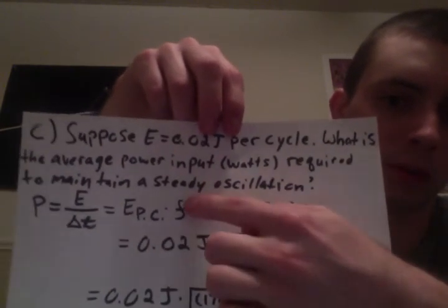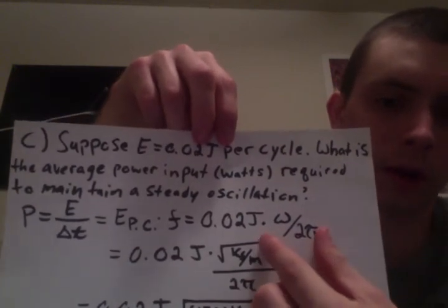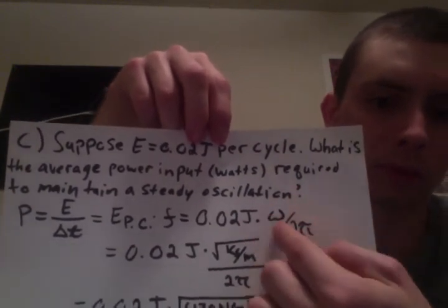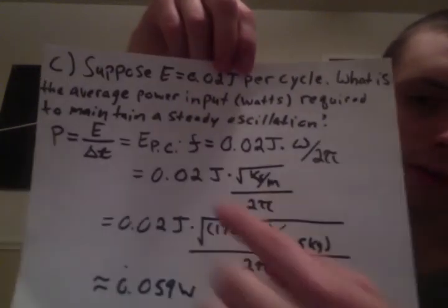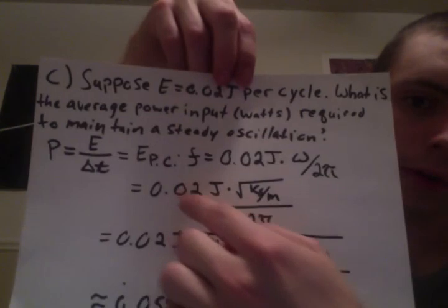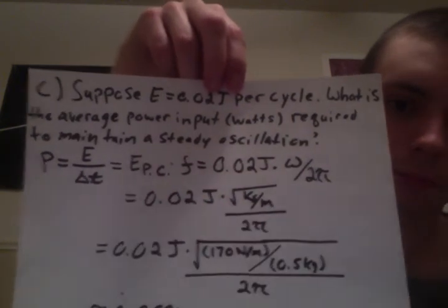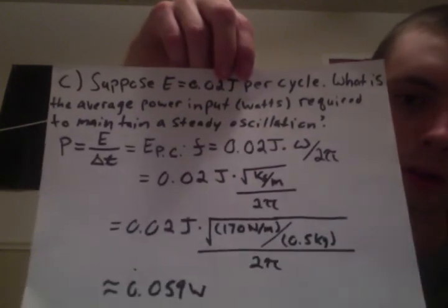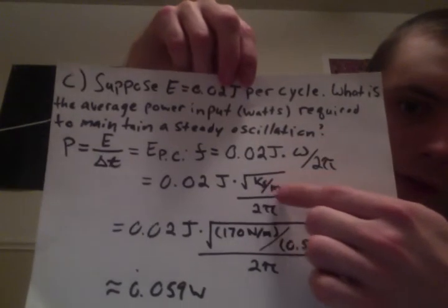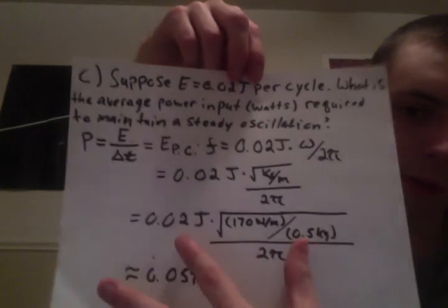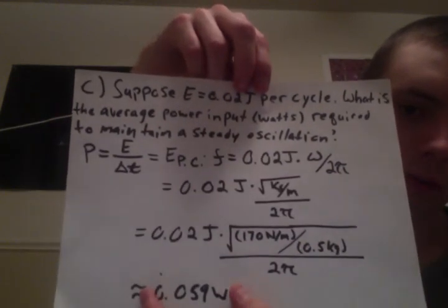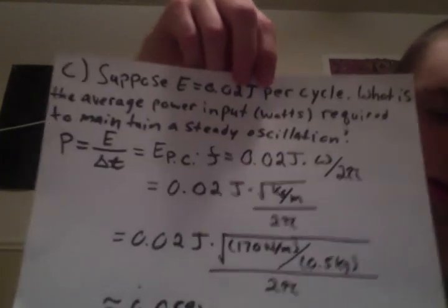From here, substitute the frequency as omega over 2π, substitute omega as the square root of K over M. All of that's multiplied by our energy per cycle. Plug in the stiffness value and the mass value and 2π. Plug in everything and I have this answer in watts, and I'm pretty sure that's it. Thank you.